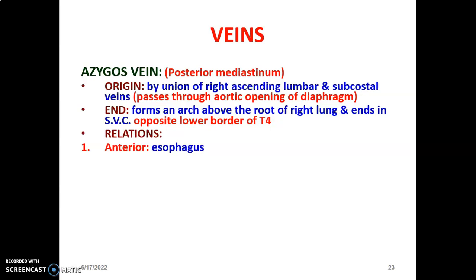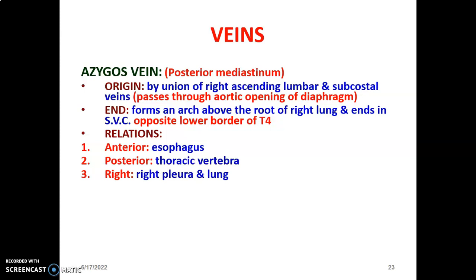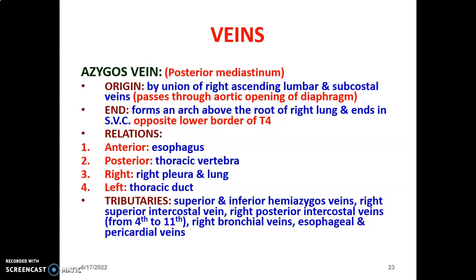The relations of the azygous vein: anteriorly is the esophagus, posteriorly the thoracic vertebra, to its right the right pleura and lung, and to its left the thoracic duct. The tributaries of the azygous include superior and inferior hemiazygous veins, the right superior intercostal vein, the right posterior intercostal veins from the fourth to eleventh, the right bronchial veins, esophageal veins, and pericardial veins.